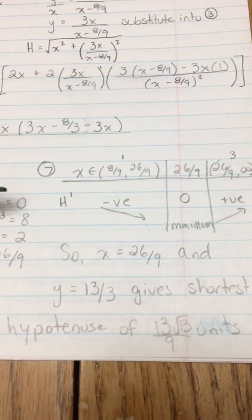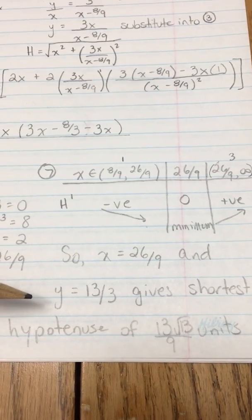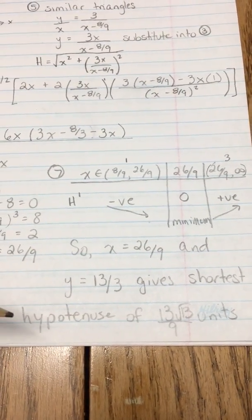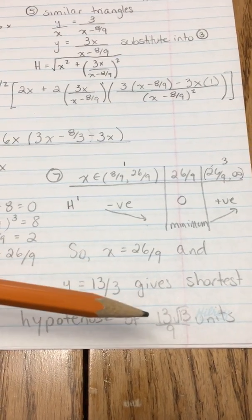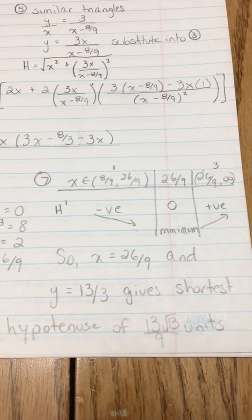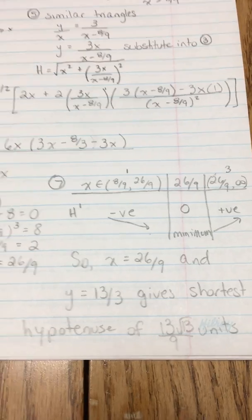So that tells us that x = 26/9 and y = 13/3 gives us the shortest hypotenuse, and that shortest hypotenuse would be 13√13/9 units.